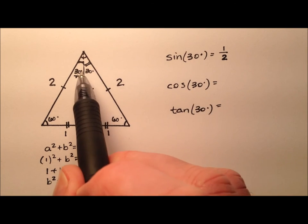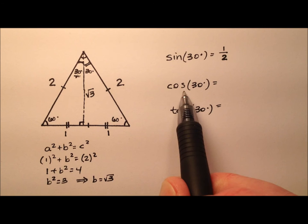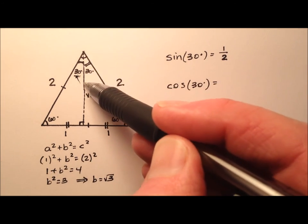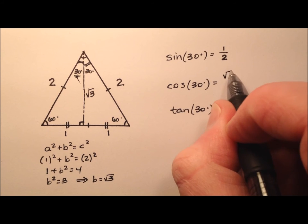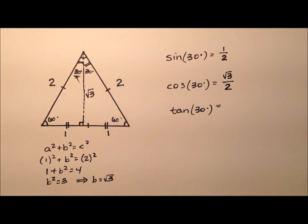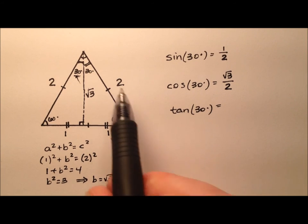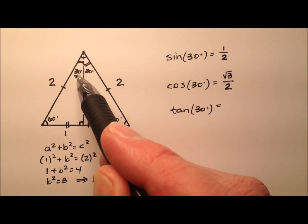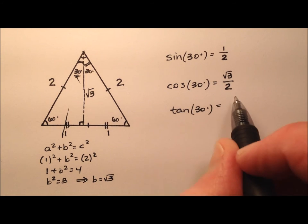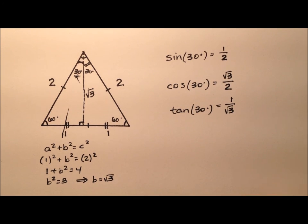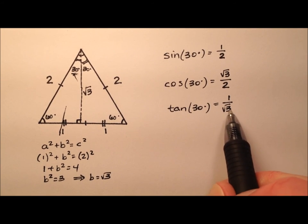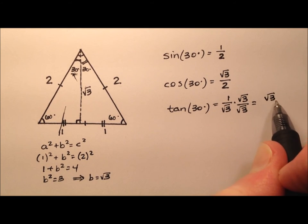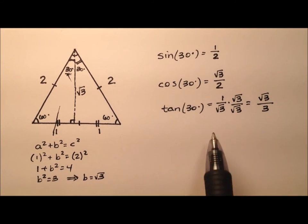Similarly, the cosine of 30 degrees — the ratio is adjacent over hypotenuse. From 30 degrees, the adjacent side is the square root of three, and the hypotenuse is two, giving us square root of three over two. For tangent of 30 degrees, tangent is opposite over adjacent — so one over the square root of three. We rationalize that to get the square root of three over three.